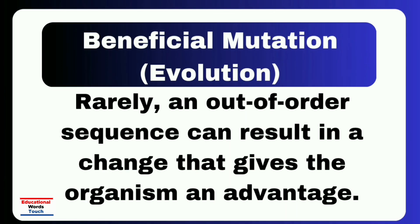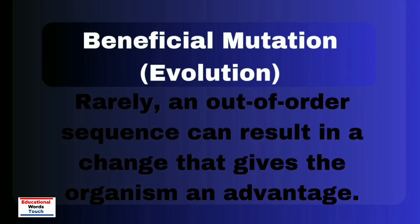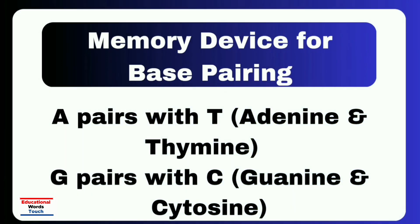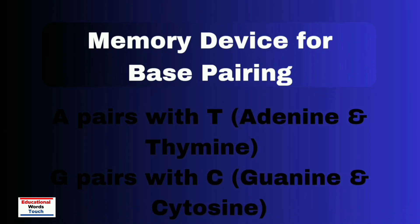Now let's discuss the memory device for base pairing. To remember the complementary base pairs for your test, use a simple mnemonic device: A pairs with T, and G pairs with C.